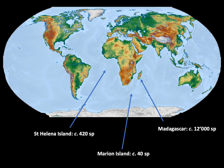The world's oceanic islands differ remarkably in terms of species richness. As an example, let's think about vascular plant species. The island of Madagascar has more than 12,000 species. St Helena, on the other side of Africa, hosts around 420 species. And Marion Island, to the south of Africa, has less than 40 species of vascular plants.